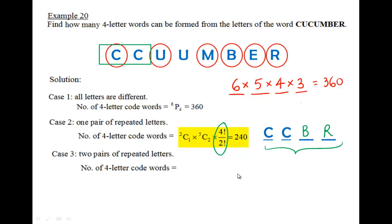And the final case is two pairs of repeated letters. In this case, it's quite clear cut, having two C's and two U's. In this case, 4 factorial divided by 2 factorial times 2 factorial.